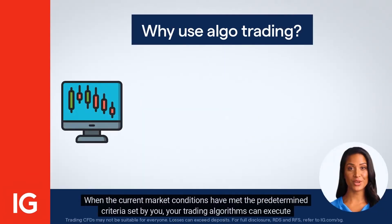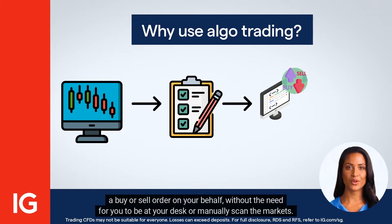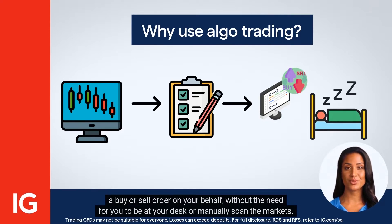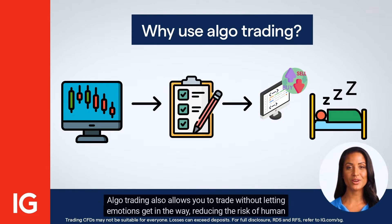When the current market conditions have met the predetermined criteria set by you, your trading algorithms can execute a buy or sell order on your behalf without the need for you to be at your desk or manually scan the markets. Algo trading also allows you to trade without letting emotions get in the way, reducing the risk of human errors when placing trades.